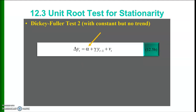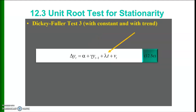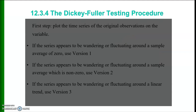If there is a constant but no trend, then the equation becomes: delta yt equals alpha plus gamma times yt-1 plus vt. If there is a constant as well as a trend, the third version of the Dickey-Fuller test is used, where delta yt equals alpha plus gamma times yt-1 plus lambda t plus vt. In this third equation, both the constant and the trend term are included. The testing procedure begins by plotting the time series of the original observations.